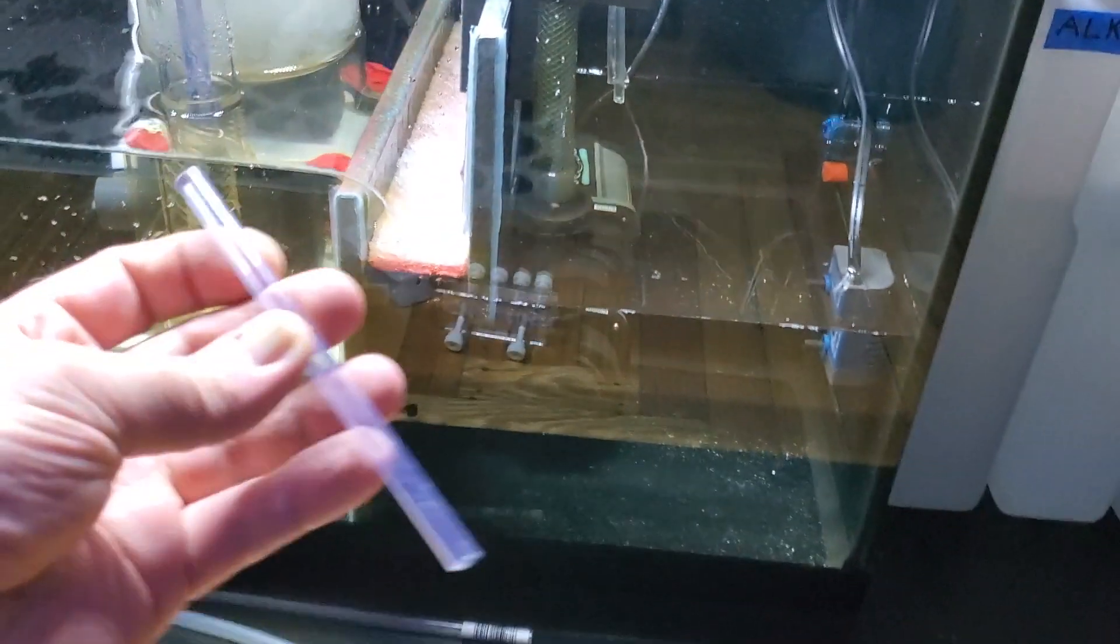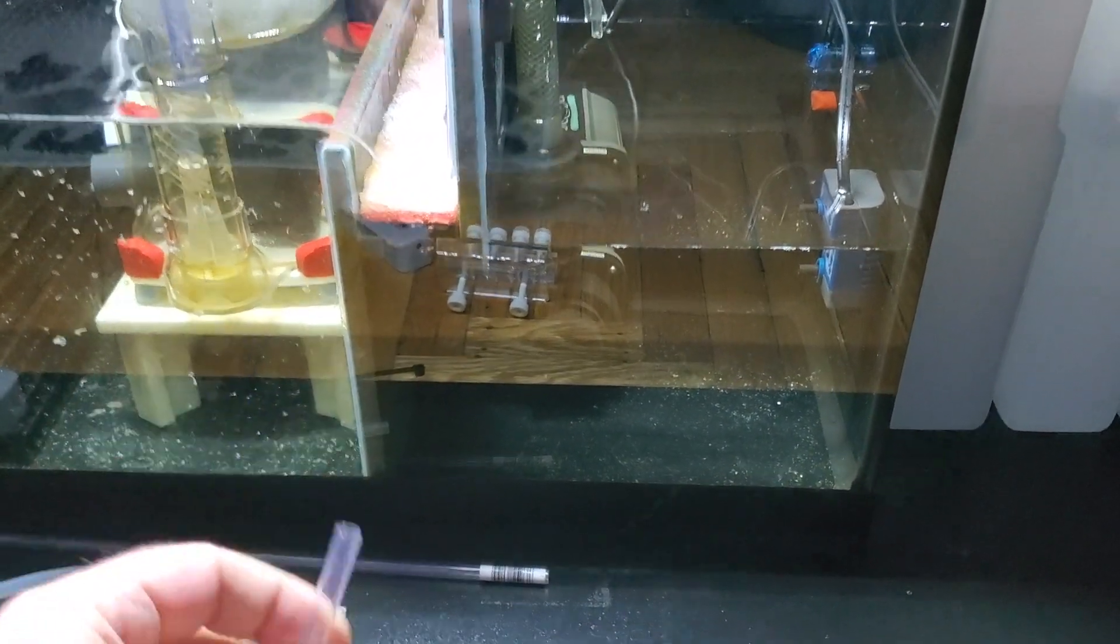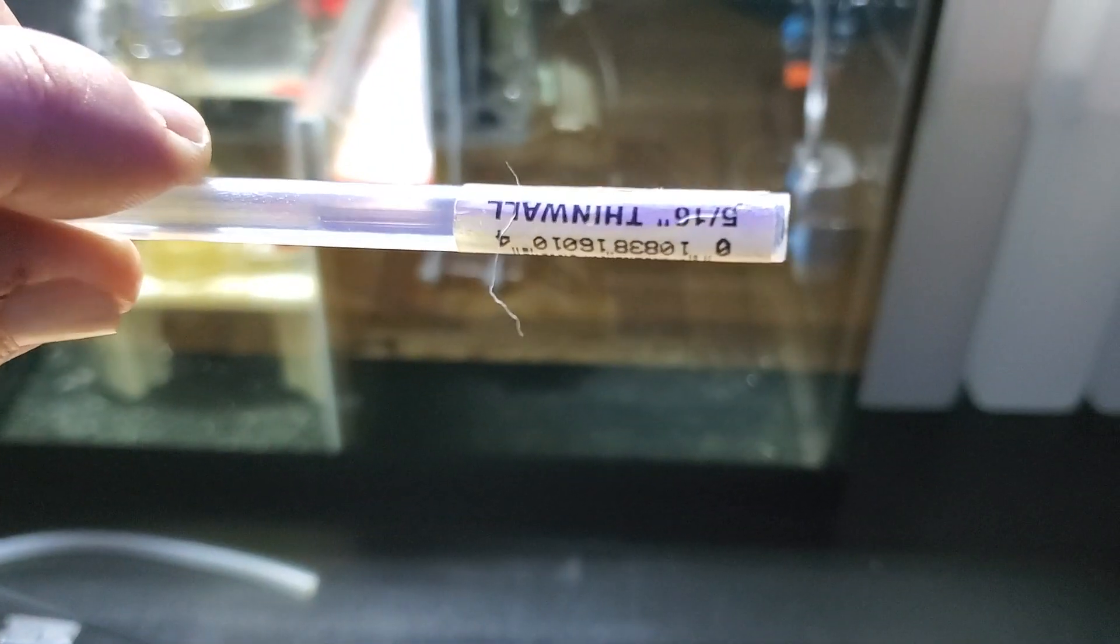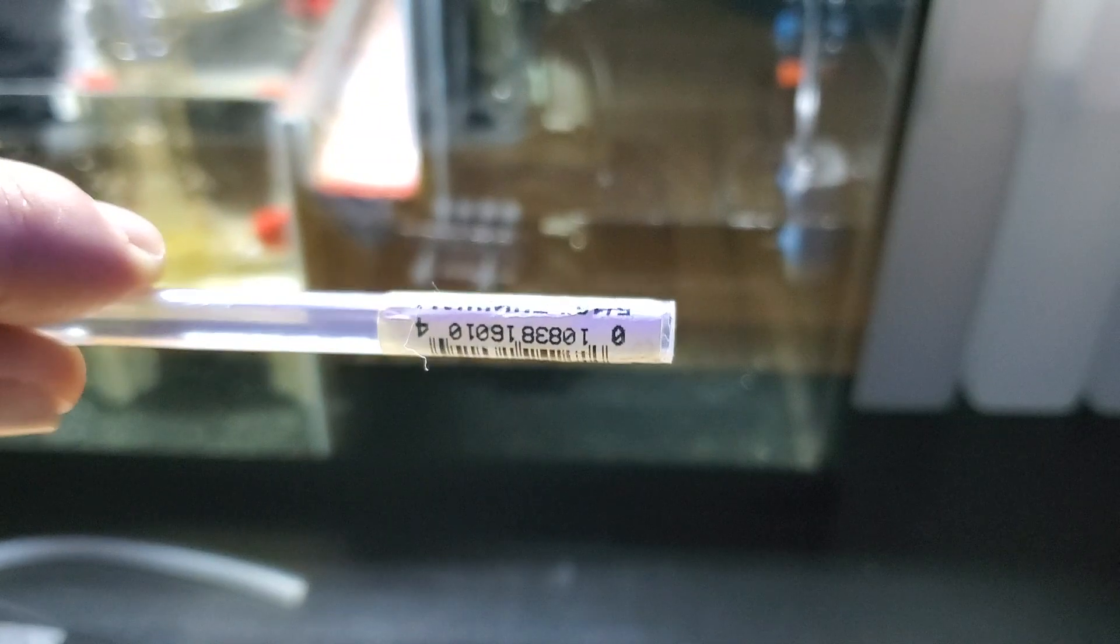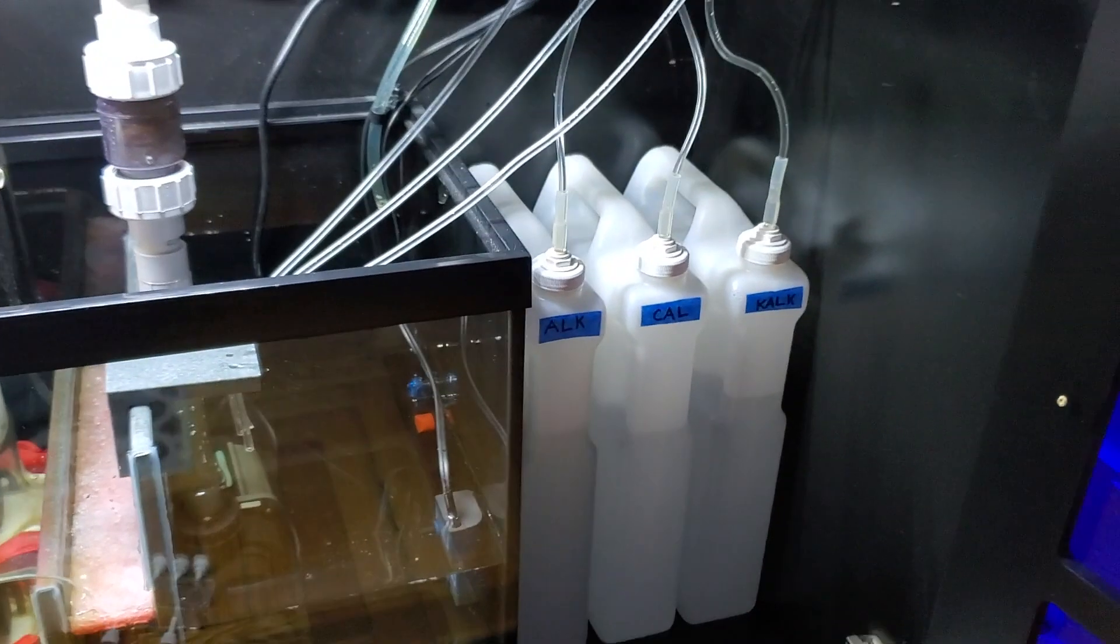And since the tubing is really small and these are bigger lines, I'm actually going to take some old thin wall tubing. I believe, yeah, this is 5/16ths tubing that I'm going to cut and put in here. So let me get that done and show you guys how the finished product looks.